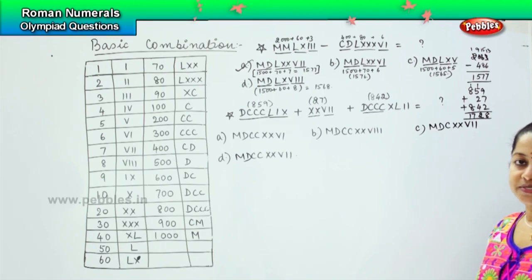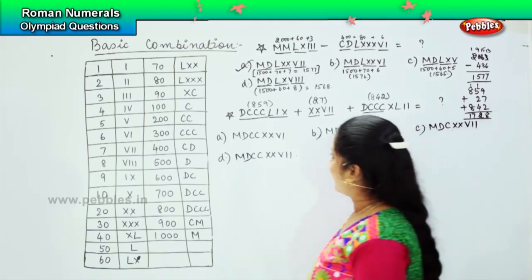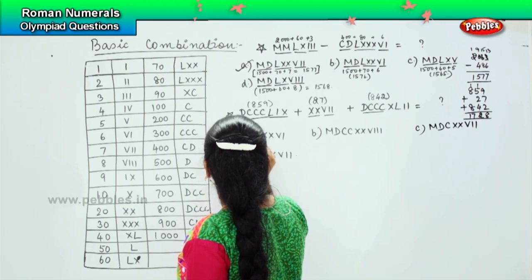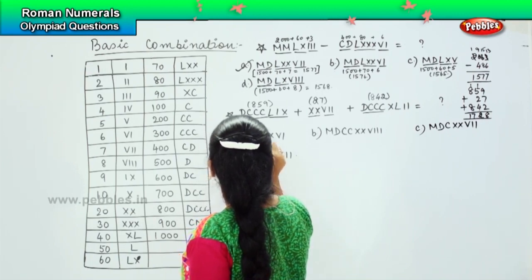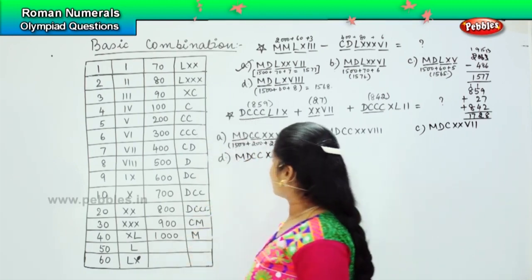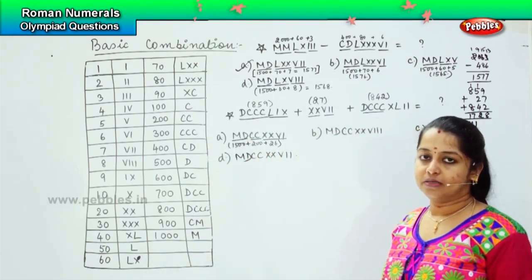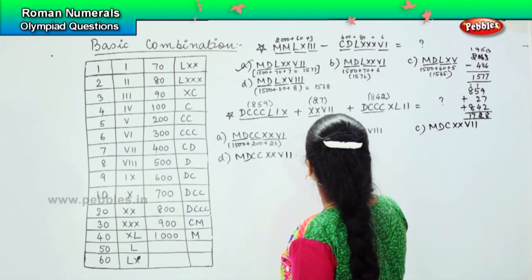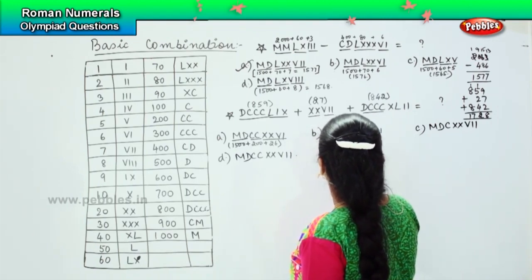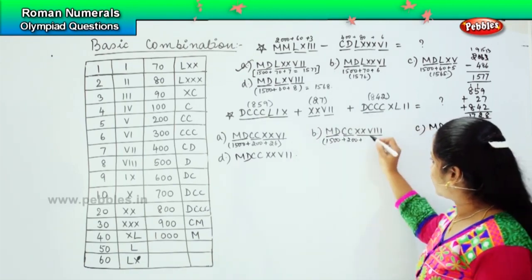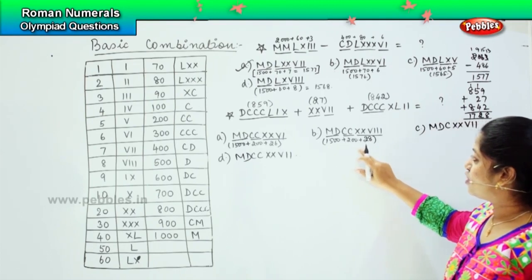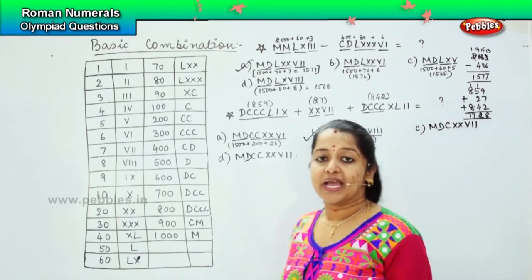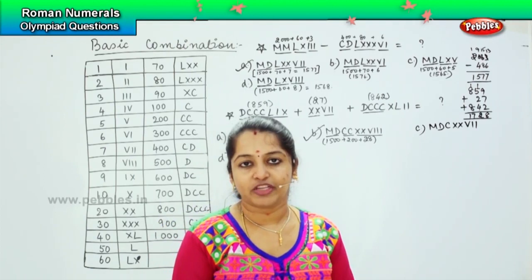So let us see which of these options has the answer 1728. Coming to the first one: MD is 1500 plus 200 plus 26, so it becomes 1526 — that is not the answer. Coming to the next one: MD is 1500 plus 200 plus double X, that is 28, which is 1728. And that matches! So option D is the right answer.